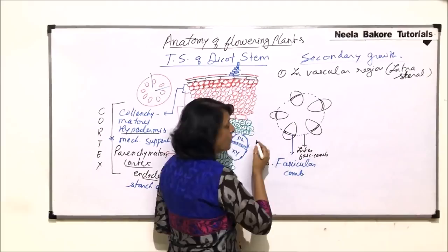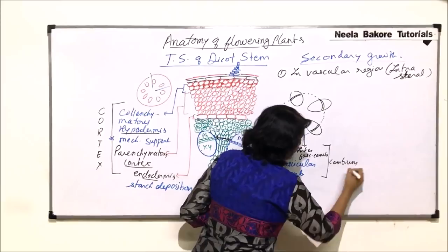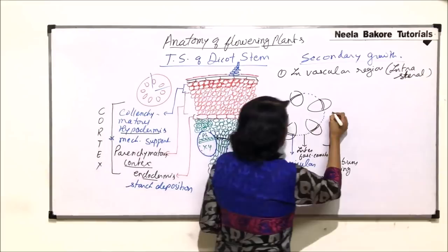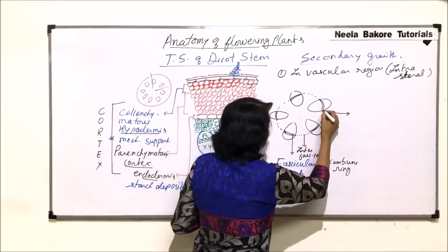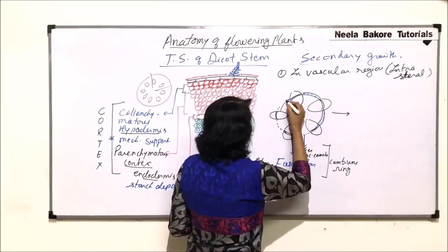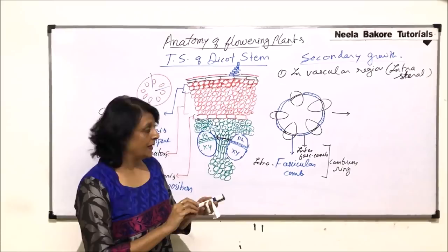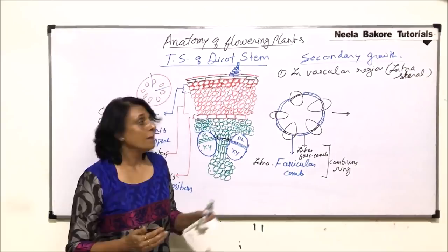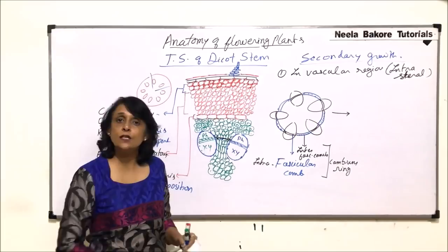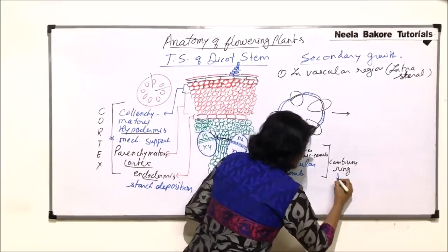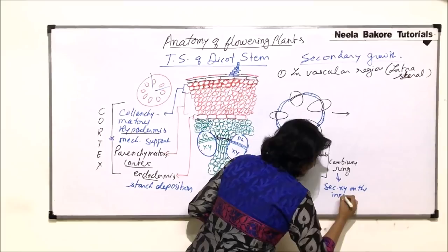As a result of the fascicular and inter-fascicular cambium together, a cambium ring is formed. The cells of the medullary rays have become meristematic through dedifferentiation, and now we have a complete cambium ring. This cambium ring is going to produce secondary tissue — because it is the tissue formed after the complete primary structure is already formed.